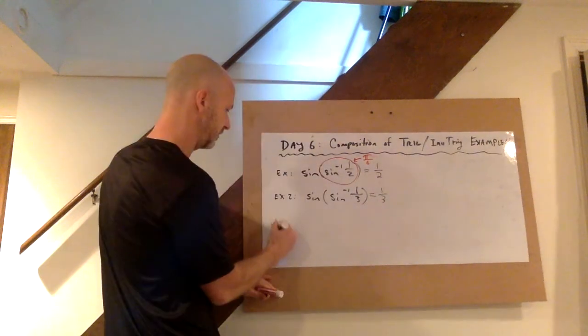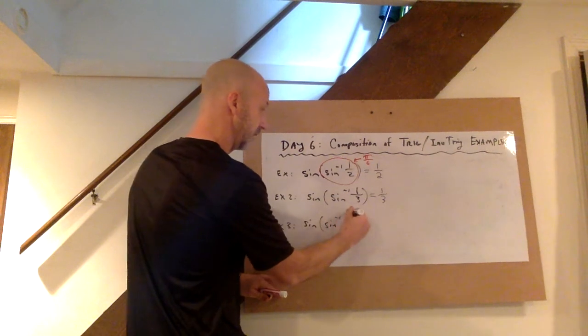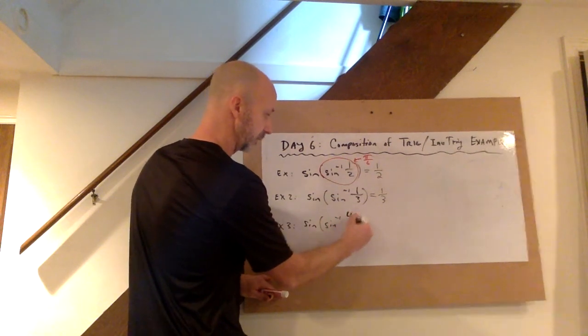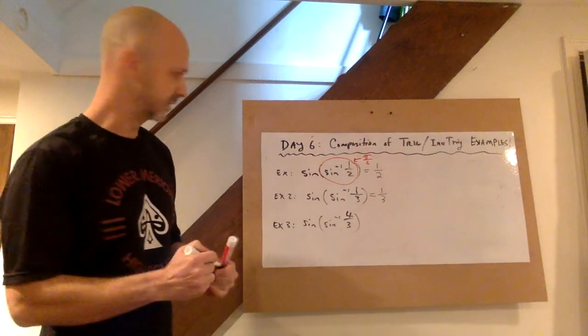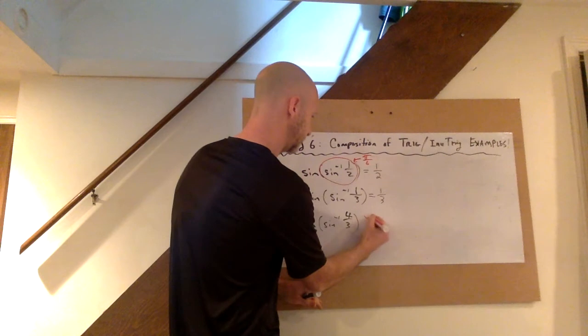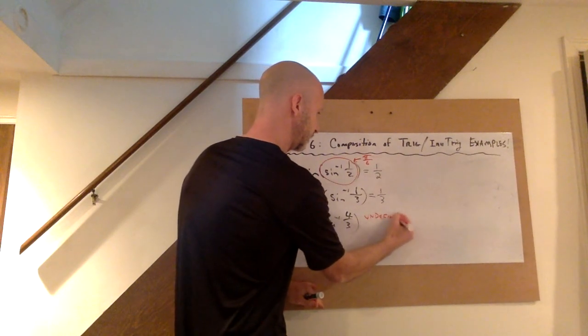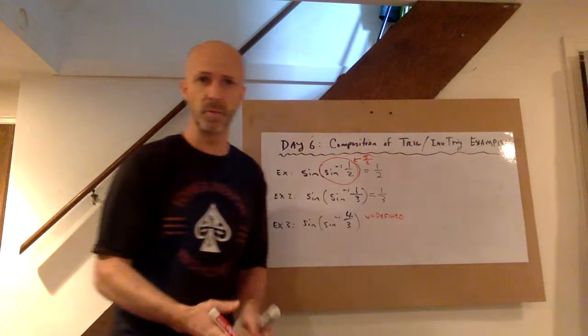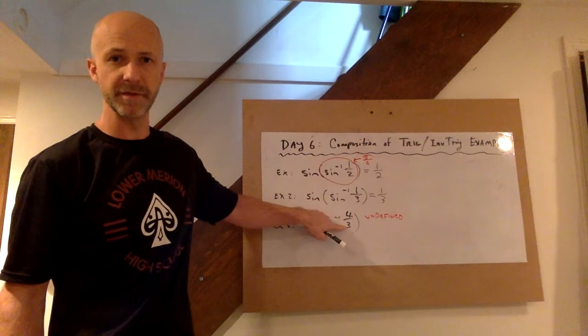And if I gave you an example like sine of sine inverse of, say, 4/3, I don't think you would bat an eye and say no, the answer is not 4/3. This would be undefined because 4/3 is a ridiculous ratio for sine to achieve. Sine is never greater than 1. It's impossible for the opposite to be greater than the hypotenuse.